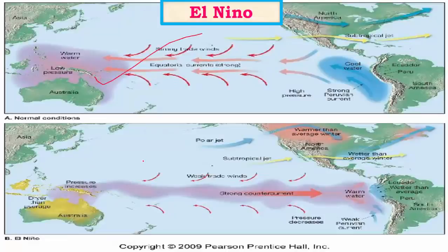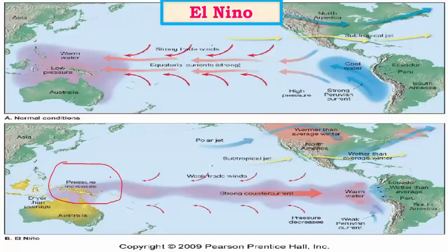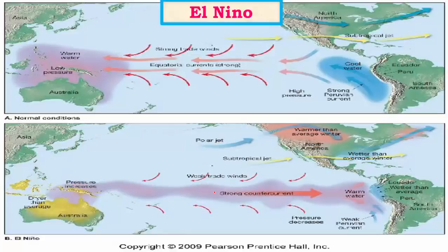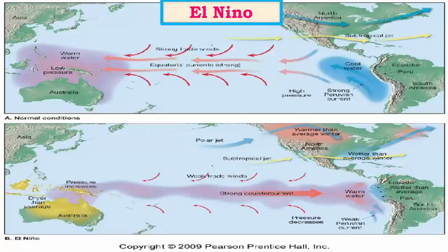El Niño is a condition where the Walker cell significantly weakens. Since the Walker cell drives winds from east to west, when it is weak the warm water piling up on the western coast is reduced. When El Niño is very intense, the Walker circulation reverses — winds blow from west to east, creating a counter equatorial current. This current causes piling up of warm water in the central and eastern Pacific. As a result, upwelling near South America is negligible or completely absent, and fishing activity in the eastern Pacific is adversely affected — a huge loss for Ecuador and Peru.